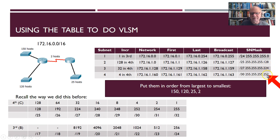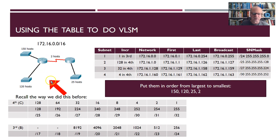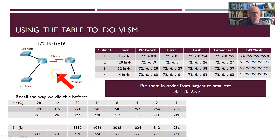And that's it. We have now subnetted this network with different subnet masks. By doing so, we conserve addresses and have enough for everything — that's how we do VLSM. We'll see you in the next video and do a bit more practice on this.